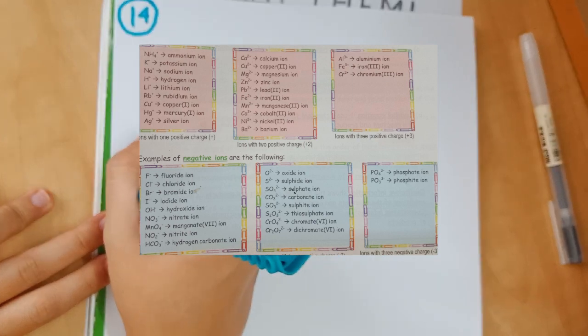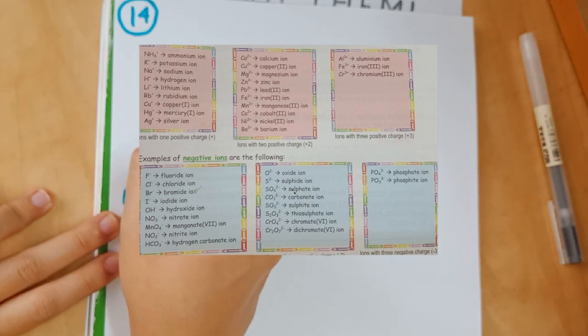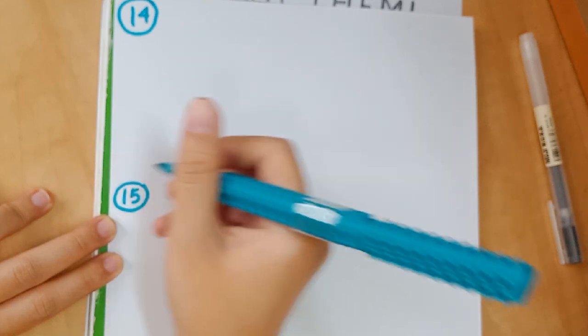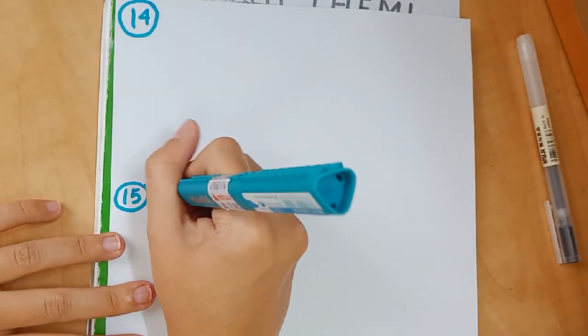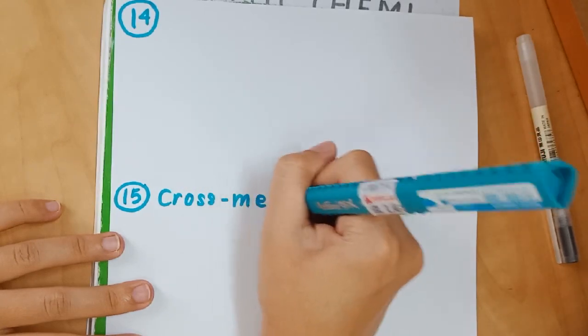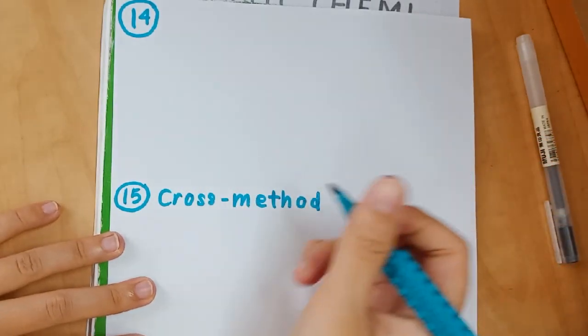Number 15 is the cross method, which you can only apply if you know all the formulas for positive and negative ions. I'll be giving you a couple of examples for cross method like calcium nitrate and potassium chloride.